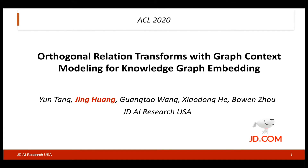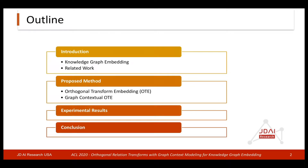Hi, my name is Jing Huang. I'll be presenting our work on orthogonal relation transforms with graph context modeling for knowledge graph embedding. This is joint work with my colleagues Yun, Guangtao, Xiaodong, and Bo Wen at JGAI Research. I'll start with an introduction on knowledge graph embedding and review some related works, then present our new proposed orthogonal transform embedding, OTE, and how to add graph context to OTE.